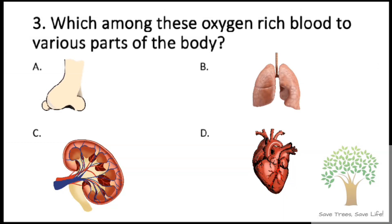Question number 3: Which among these organs reach blood to various parts of the body? A. Nose, B. Lungs, C. Kidney, D. Heart. So the answer is option D, Heart.